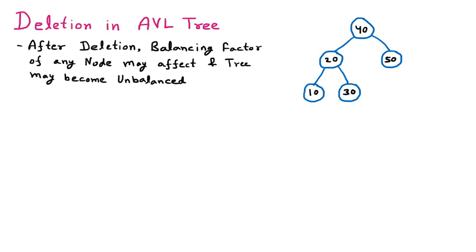To understand this, we are taking this diagram and we want to find out whether this tree is AVL or not. All the leaf nodes have a balancing factor of 0. For node 20, we have 1 level on the left and 1 level on the right, so 1 minus 1 equals 0. For node 40, we have 2 levels on the left and 1 level on the right, so 2 minus 1 equals 1. The balancing factor for an AVL tree should be 0, 1, or minus 1 for every node. Since all nodes satisfy this, this is a balanced AVL tree.